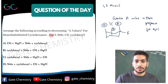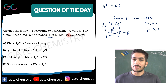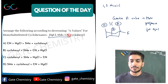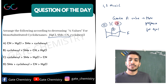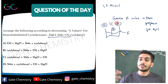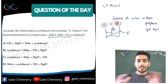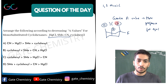The A-value measures the free energy difference between the equatorial and axial conformations. If the substituent is equatorial versus axial, the greater the energy difference, the more stable the equatorial form, and thus the larger the A-value. To summarize: higher A-value means greater preference for the equatorial position.